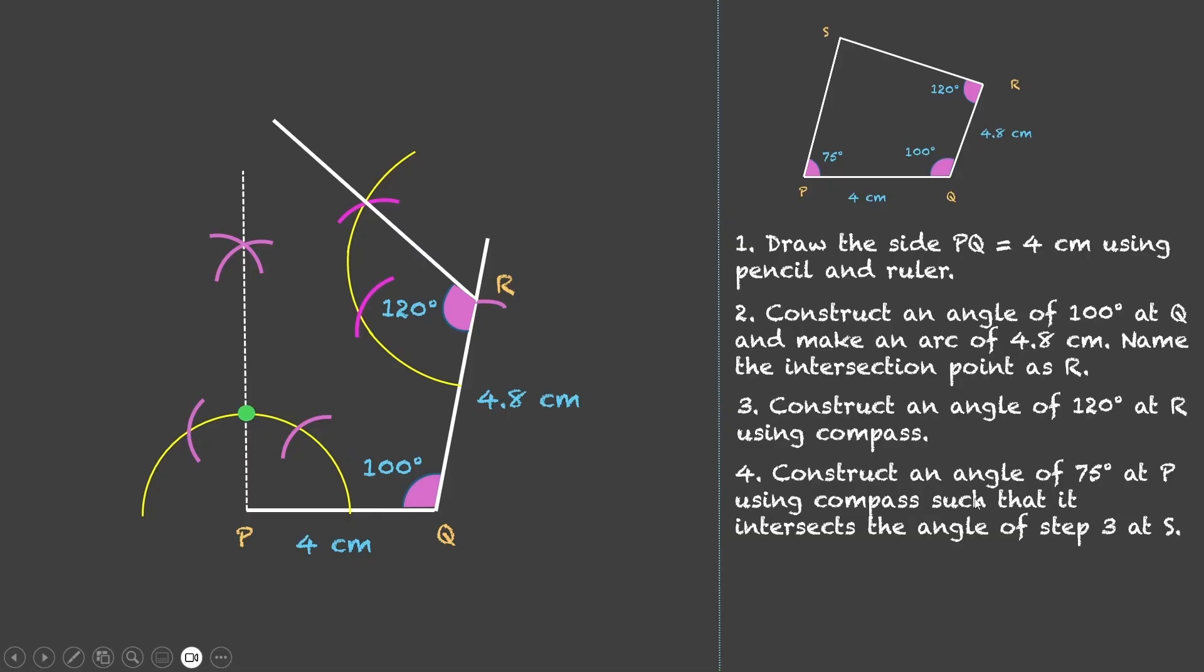We need a 75-degree angle. So 75 is the average of 90 and 60. It lies exactly between, so we can bisect these two angles.